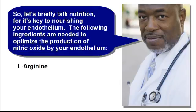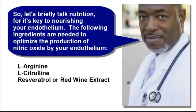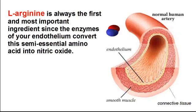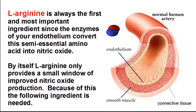L-arginine, L-citrulline, resveratrol or red wine extract, vitamin D3, vitamin K2, and pomegranate fruit concentrate. L-arginine is always the first and most important ingredient since the enzymes of your endothelium convert this semi-essential amino acid into nitric oxide. By itself, L-arginine only provides a small window of improved nitric oxide production.